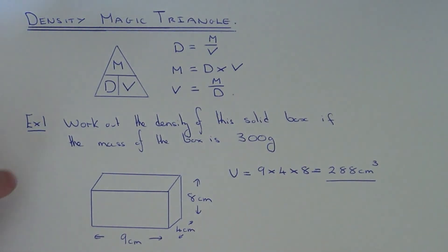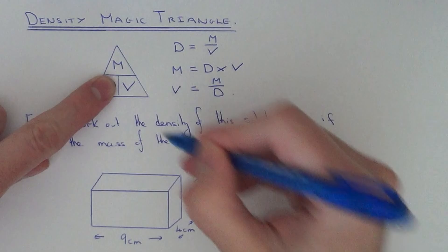If you look at your magic triangle and you need density, this is mass divided by volume.